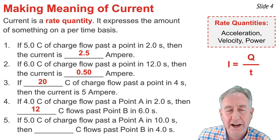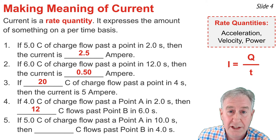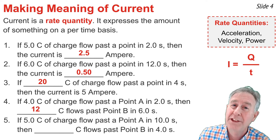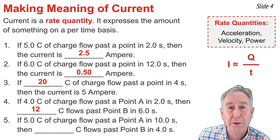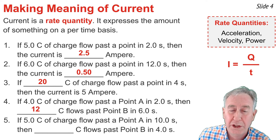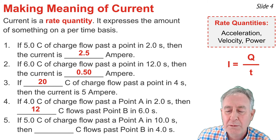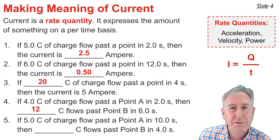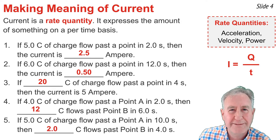In five, it's very similar to four. If five coulombs flow past point A in 10 seconds, then the current is 0.5, and that's the ratio of Q per T at any location. Which means at point B, if T is 4, then Q must be 2 coulombs.